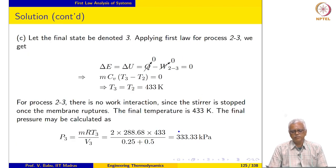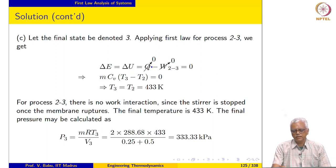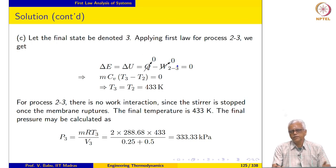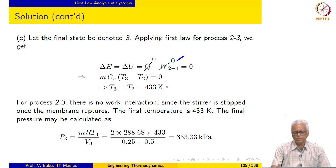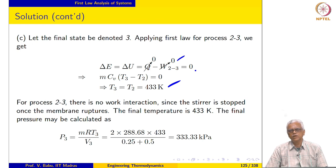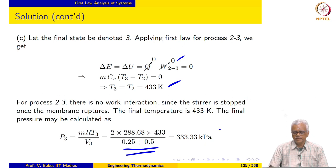The final equilibrium state is labeled state 3. Applying first law for process 2→3: Q is zero, displacement work is zero (no boundary deformation), and the stirrer is stopped once the membrane ruptures. With no work or heat interaction, the temperature remains constant at 433 K. Knowing the final temperature and the total vessel volume, the final pressure is calculated using the equation of state to be 333.33 kilopascal.